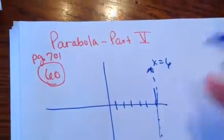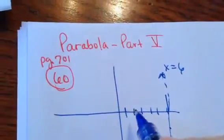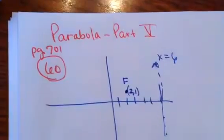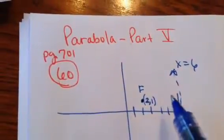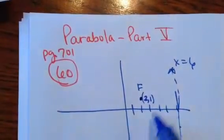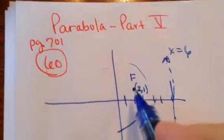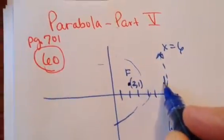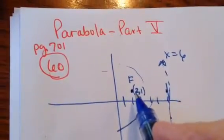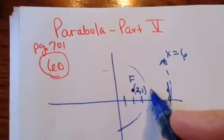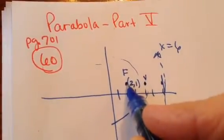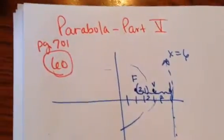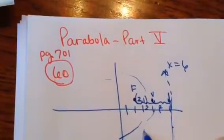Remember, your directrix is a line. It also says the focus is (2, 1). So here's my focus right here at (2, 1). I know I've got a parabola that looks like this, because your focus always sits kind of inside the bowl. And I know that my vertex is exactly between these two. If this is 6 and this is 2, I want halfway between — 6 plus 2 is 8, divided by 2 is 4. So the vertex is at 4, right there. The distance here is 2, which would be your p-value.